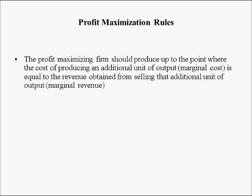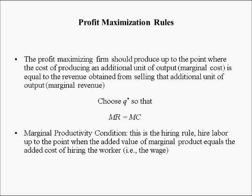The profit-maximizing firm should produce up to the point where marginal cost equals marginal revenue — as you learned in principles of microeconomics. In labor economics it's analogous: hire labor up to the point where the value of marginal product equals the added cost of hiring a worker (the wage). So choose E such that VMP = W. In the long run, the firm maximizes profits by choosing both how many workers to hire and how much capital to invest in.